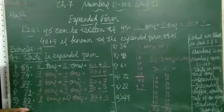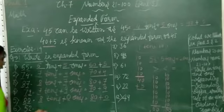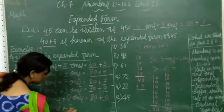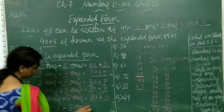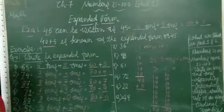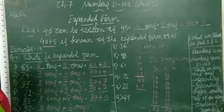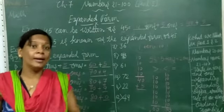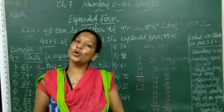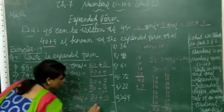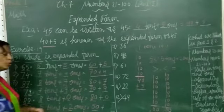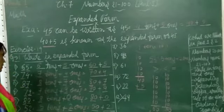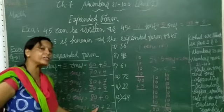Now next: 52. In 52, how many 10s? 5 10s. And how many 1s? 2 1s. So 5 10s and 2 1s — 1 10 equals 10, 2 10s equals 20, 3 10s equals 30, 4 10s equals 40, 5 10s equals 50. So 50 plus 2 1s — 50 plus 2. This is also called expanded form. 50 plus 2 is the expanded form of 52.